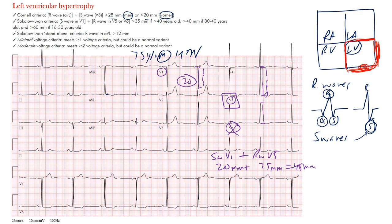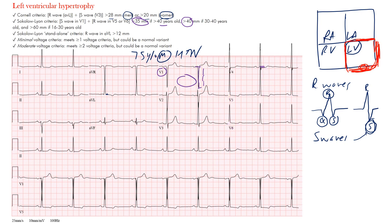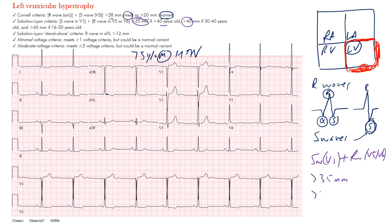The R wave in V5 counts up to about 25 millimeters, so 20 plus 25 is 45 millimeters. That exceeds the threshold. For a male over age 40, the Sokolow-Lyon criteria requires greater than 35 millimeters, which is certainly met here. So this patient does meet the Sokolow-Lyon criteria — S wave in V1 plus R wave in V5 or V6 should be greater than 35 millimeters for patients over 40, or greater than 40 millimeters for patients between ages 30 and 40.